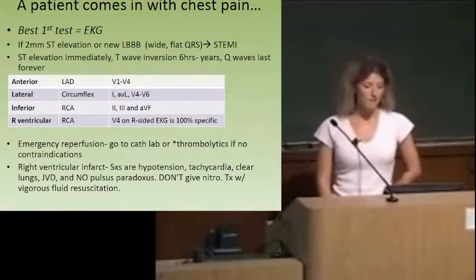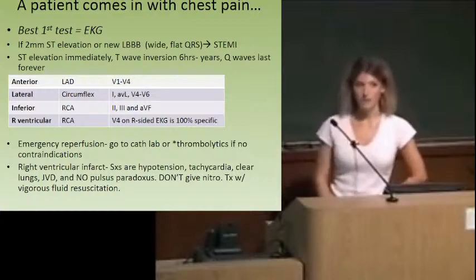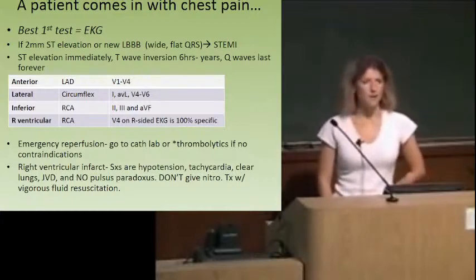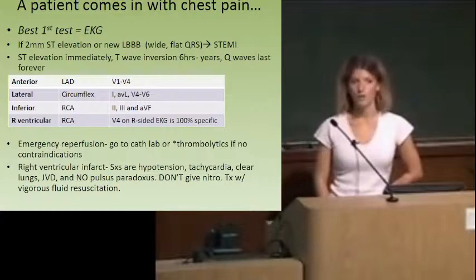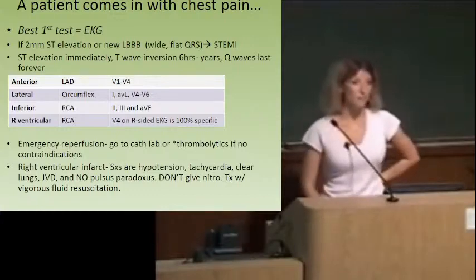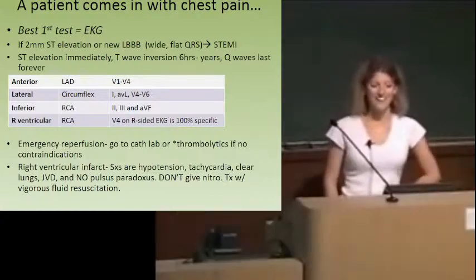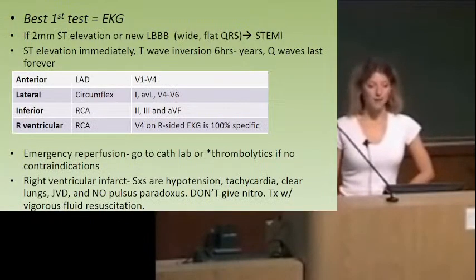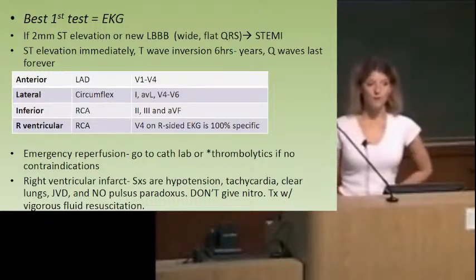What are you looking for on that EKG? ST changes. We're going to look for ST elevation. Is that the only criteria to diagnose a STEMI? A new left bundle branch block is also scary. So our criteria for a positive EKG are two millimeters of ST elevation or a new left bundle branch block. Either of those fulfill criteria for a STEMI.